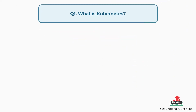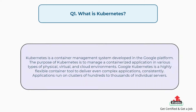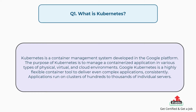Question number one: What is Kubernetes? Kubernetes is a container management system developed in the Google platform. The purpose of Kubernetes is to manage a containerized application in various types of physical, virtual, and cloud environments. Google Kubernetes is a highly flexible container tool to deliver even complex applications consistently. Applications run on clusters of hundreds to thousands of individual servers.